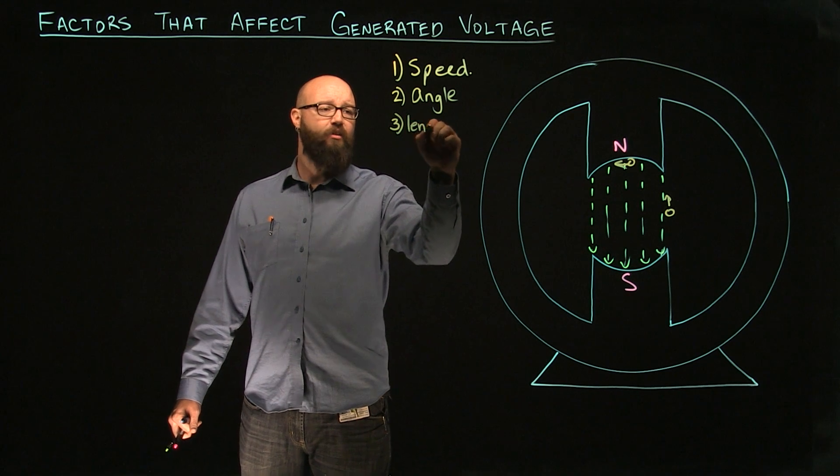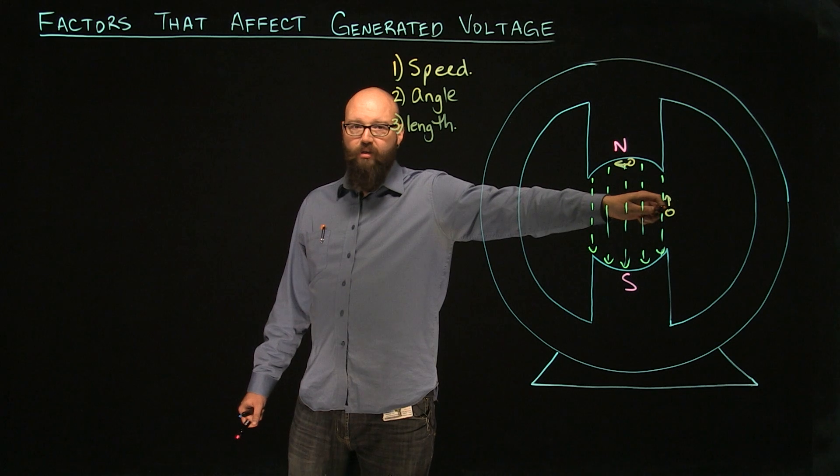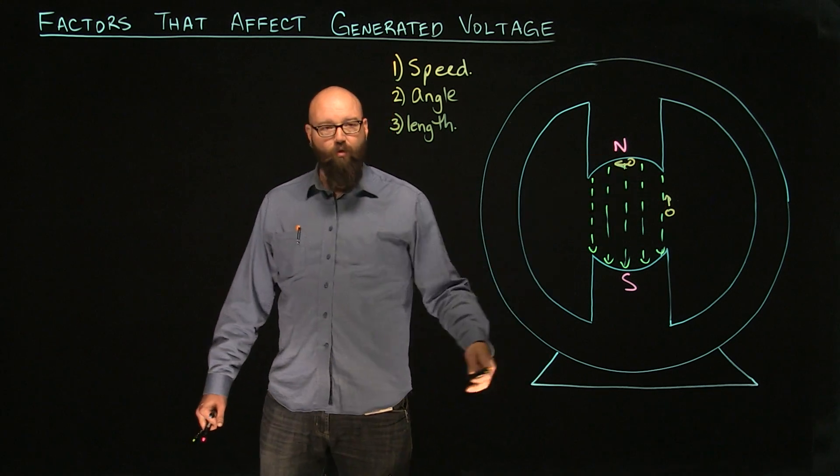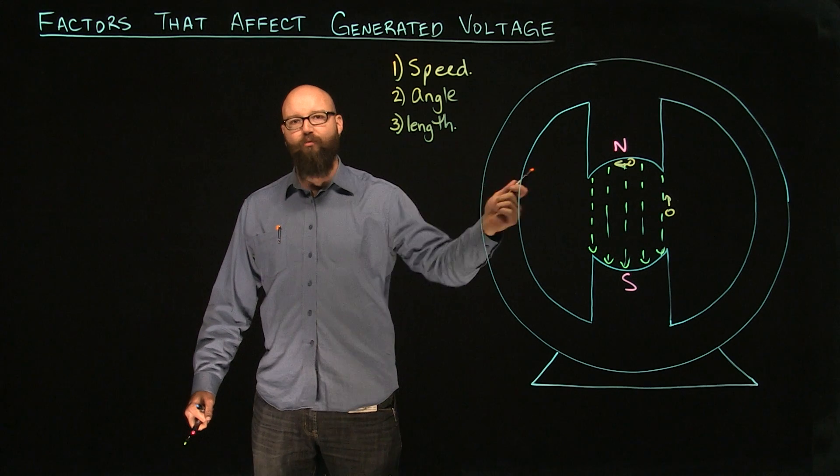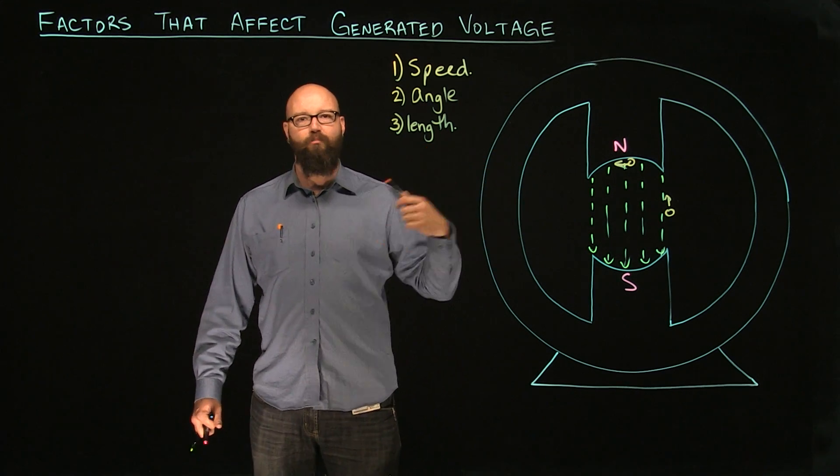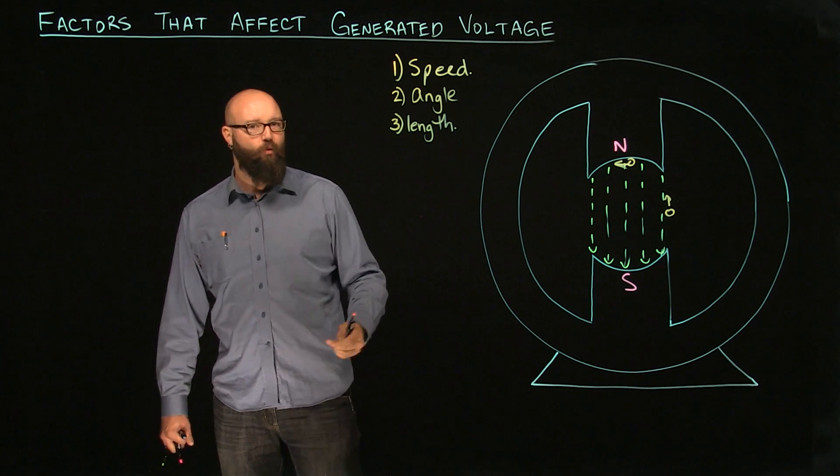Number three, the length of the conductor. We have one single conductor right now moving through these lines of force. We're going to get a little bit of induced voltage. But if I take that conductor and I wrap it around a movable armature a whole bunch of times, it's kind of like getting an additive induced voltage. We're going to get a lot more induced voltage out of that.